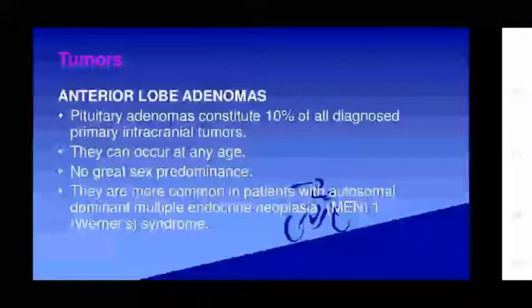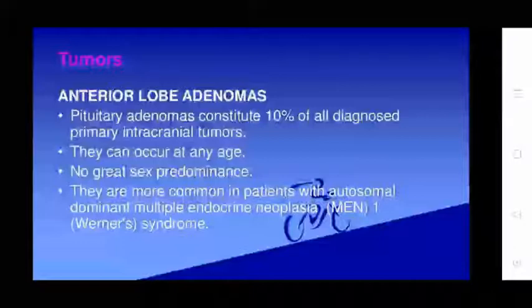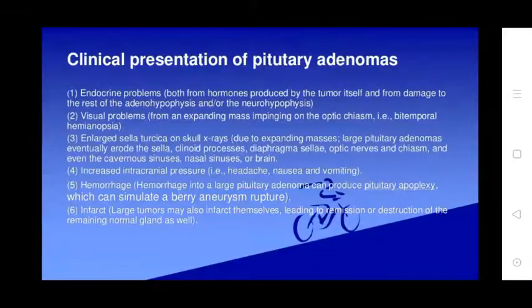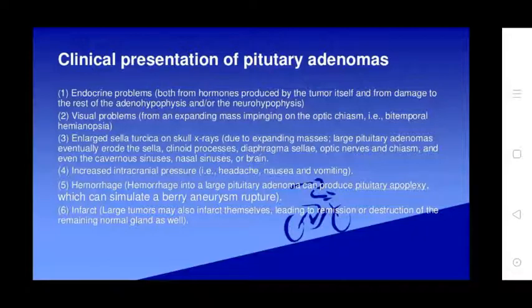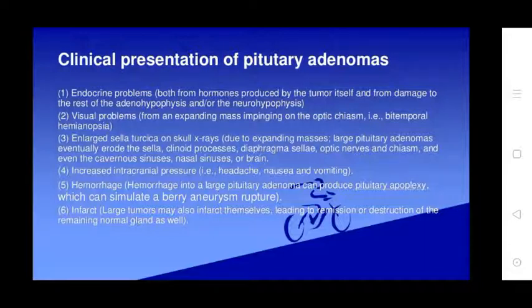Pituitary adenomas constitute 10% of all diagnosed primary intracranial tumors. They can occur at any age with no great sex prominence and are more common in patients with autosomal dominant multiple endocrine neoplasia type 1 (MEN1/Werner syndrome). Tumors in the cell from the damaged adenohypophysis and neurohypophysis cause problems from expanding mass, impinging on the optic chiasm, and enlargement of the sella turcica visible on X-ray. Large pituitary adenomas may extend into surrounding structures.